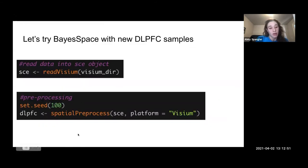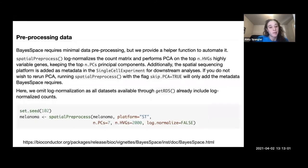And then you start with your spatial preprocessing, where, like I said before, you're going to get your highly variable genes and then do PCA. So this is from their vignette, the spatial preprocess function. Like I said, it was a different platform, but you can also choose to not log normalize the data.